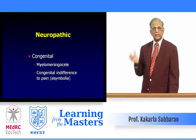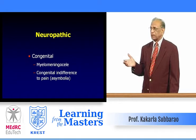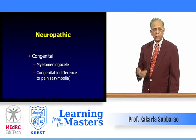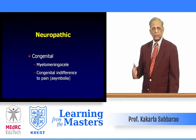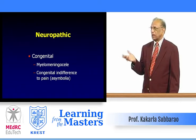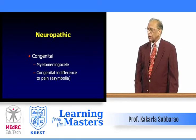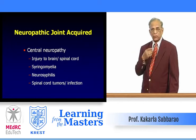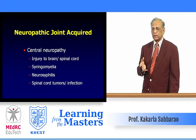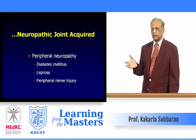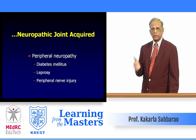Neuropathic joint disease: congenital causes include insensitivity to pain (asymbolia) and myelomeningocele or spinal dysraphism, which may produce neuroarthropathies. Acquired central neuropathy includes spinal cord or brain injury, syringomyelia, neurosyphilis, spinal cord tumors, and spinal cord infection, all of which may occasionally produce neuropathic joint. Peripheral neuropathy due to diabetes mellitus, leprosy, and peripheral nerve injuries may also cause neuropathic joint disease.